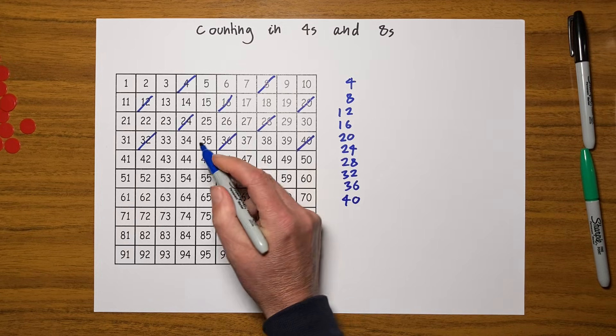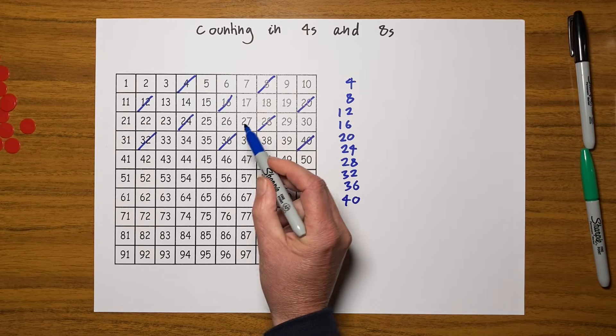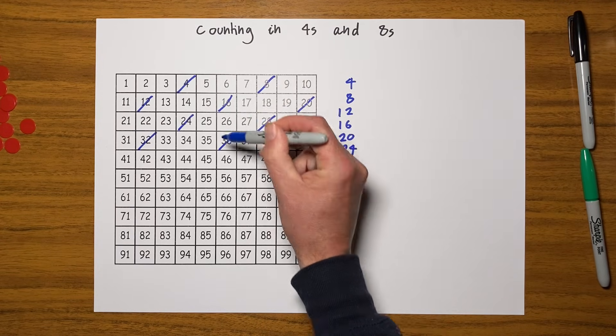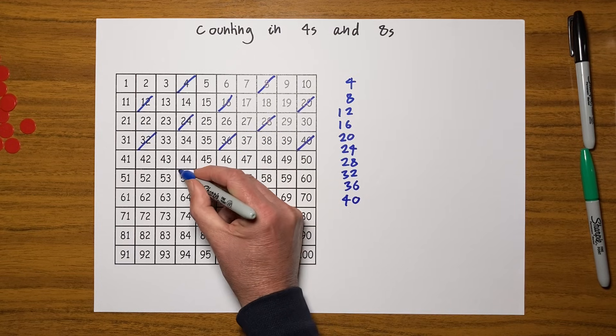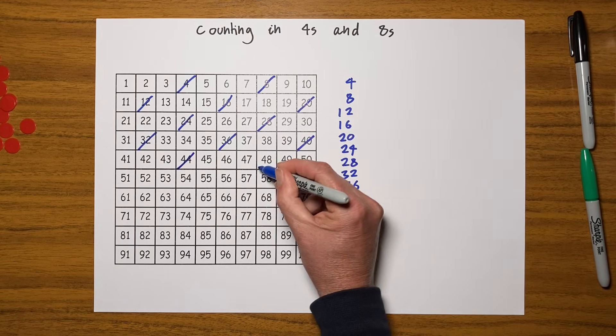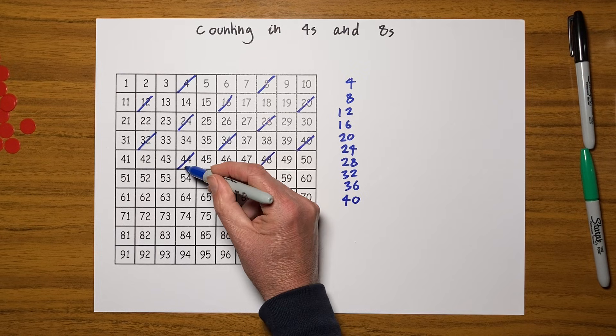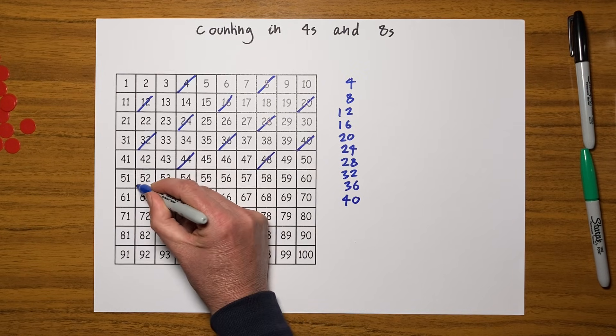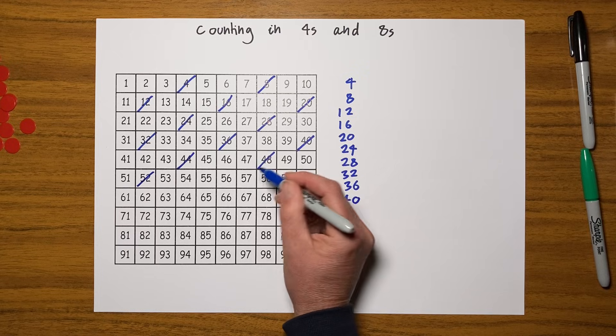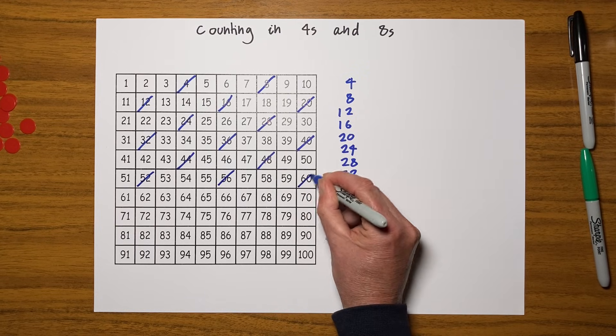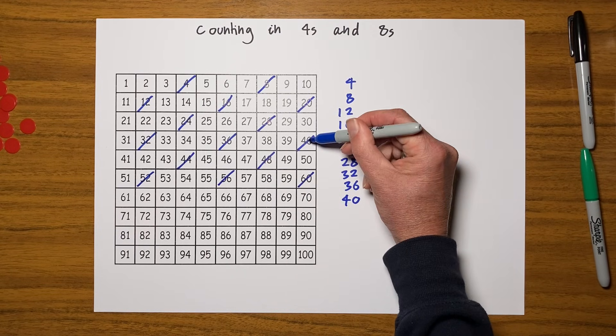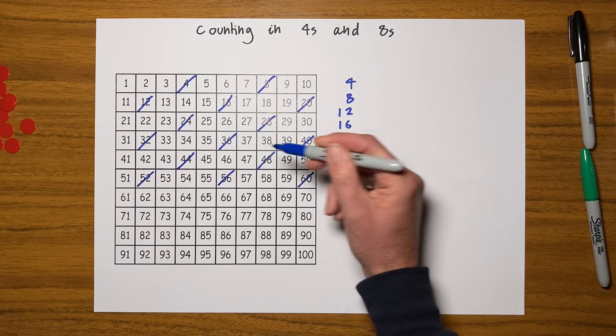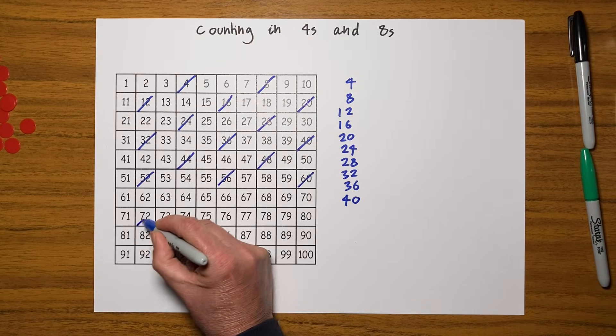It's always good to look out for patterns here. Can you see what's happening, how this pattern is working? It's going down one and along two. So I could do, for example, forty-four, forty-eight. I'm going down one and along two, and I could keep filling it out like this.